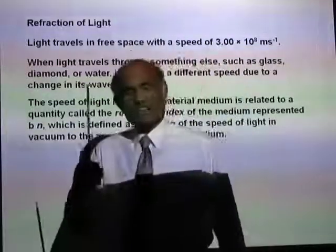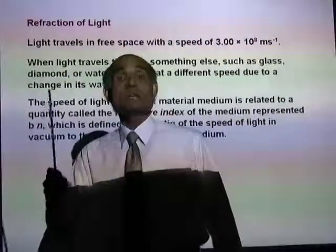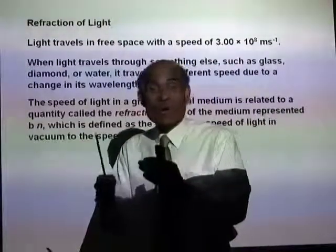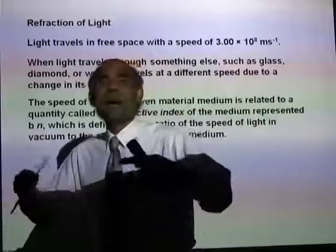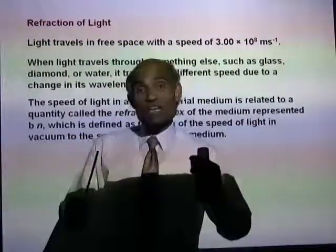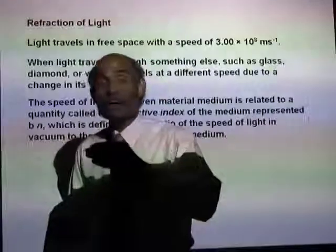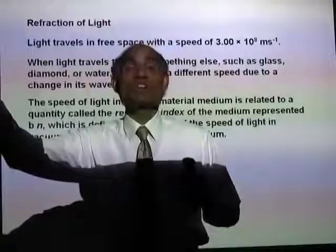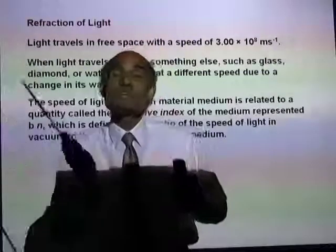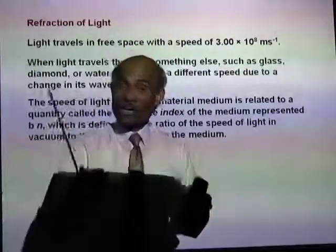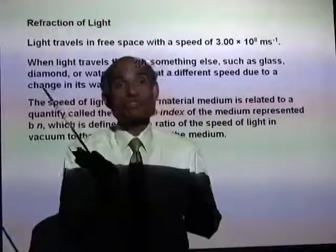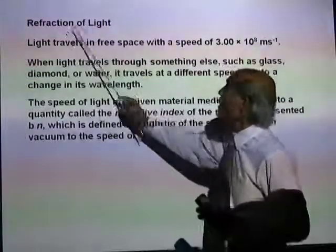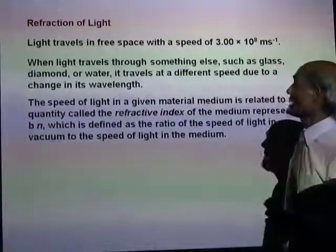Whenever there is a sudden change in speed — like going on a bicycle on a beautiful road and suddenly coming to a very bad, muddy road — your speed suddenly changes, and that change in speed creates a deviation in your direction of motion. A sudden change in motion always produces a deviation in the direction of motion, and it is that phenomenon we call refraction of light.